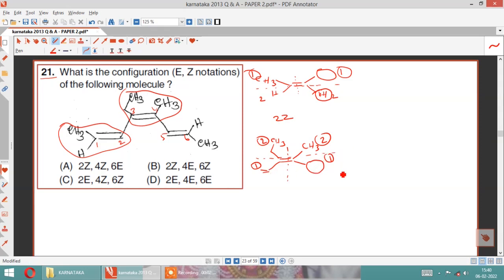2 on the same side, 1 on the same side, hence it is 4Z. Next we take this part. First you split vertically. This is 1, this is 2. This is 1, this is 2. Now on seeing horizontally, the numbers are on opposite sides. 2 and 2, 1 and 1 opposite side, hence it is 6E. The compound is 2Z,4Z,6E.